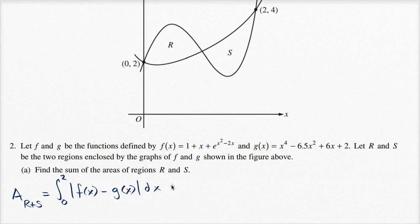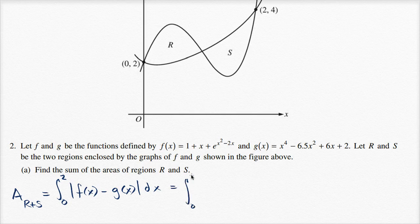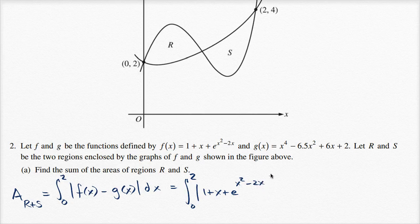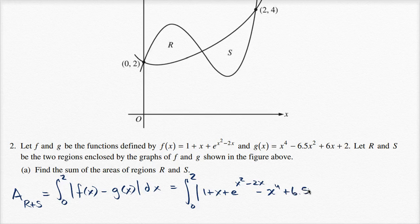or we could say this is going to be the integral from 0 to 2 of the absolute value of f(x), which is 1 + x + e^(x² - 2x), minus g(x). So minus x⁴ + 6.5x² - 6x - 2, take the absolute value, dx.